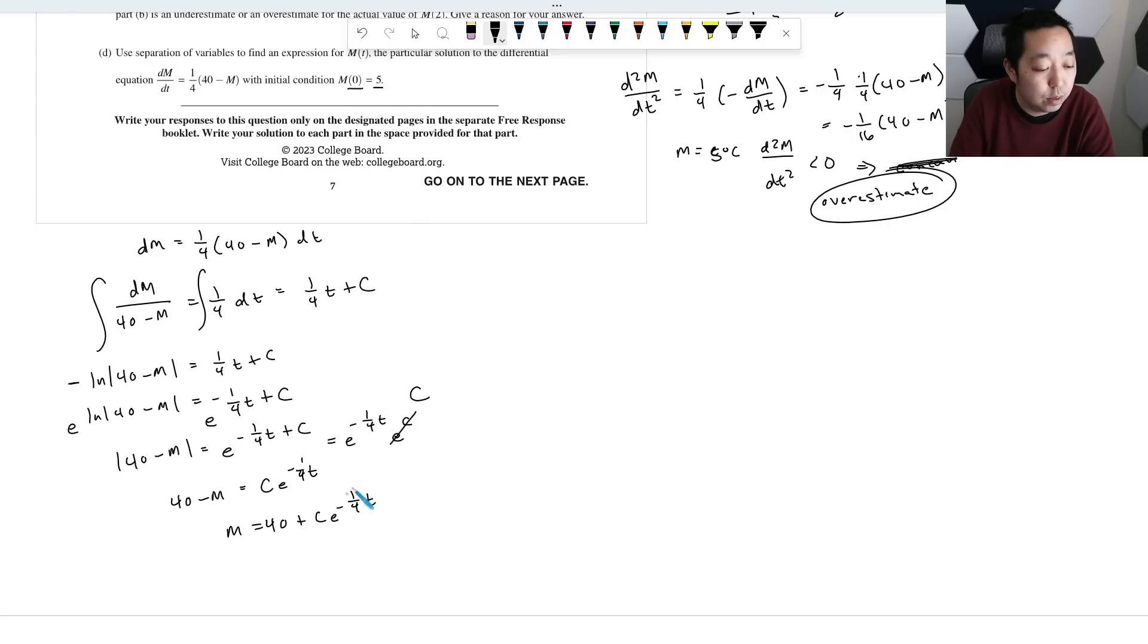When T is zero, M is five. So when T equals zero, M should be five. So we'll plug that here. Five equals 40 plus C E to the zero, E to the zero is just one. So that makes C negative 35. So our solution is going to be M equals 40 minus 35 E to the negative one quarter T. Okay, there we go.